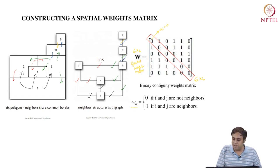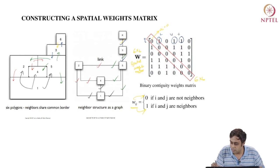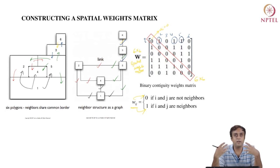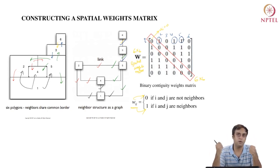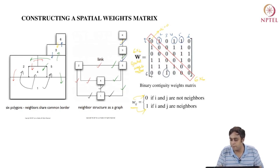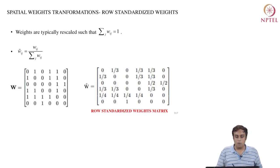Whenever two units are neighbors, we provide a weight of 1; if not neighbors, a weight of 0. For location 1, neighbors are 2, 4, and 5, so columns 2, 4, and 5 get 1s and the rest get 0s. The number of 1s in each row provides an understanding of how richly networked each location is. At an extreme is location 6, which has only one neighbor — unit 3 — so it is the least connected. This is how the weights matrix concisely accounts for the neighborhood structure.